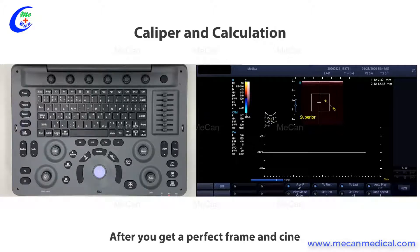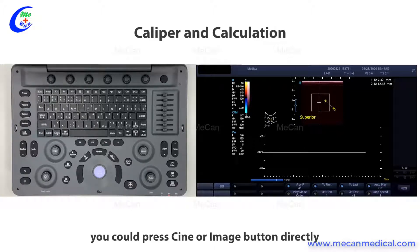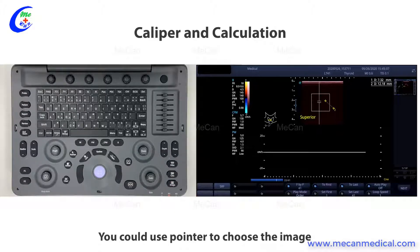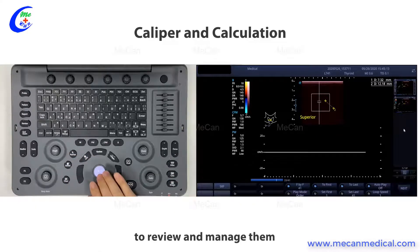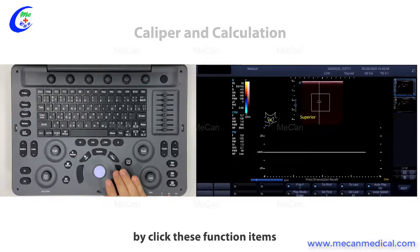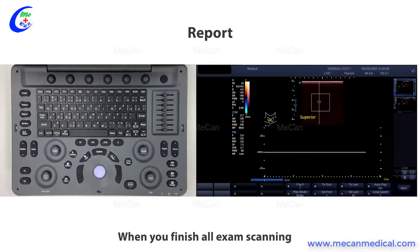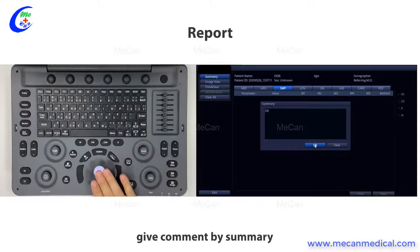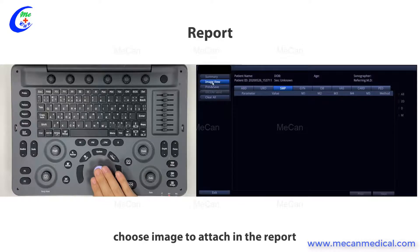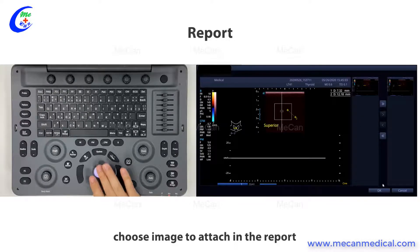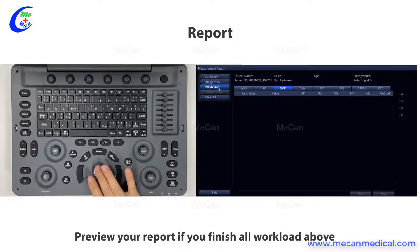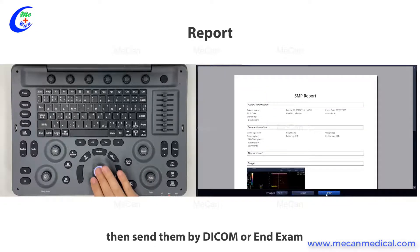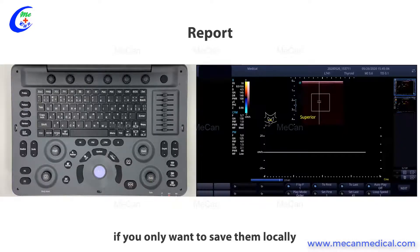After you get a perfect frame and cine, or finish all the annotation, body mark, and calculation work, press the cine or image button directly. The image and cine will be saved. You can use the pointer to choose images to review and manage them. When you finish all exam scanning, press Report to view the calculation results. Add comments via the summary field, choose images to attach to the report, preview your report, then send via DICOM or end the exam if you only want to save locally.